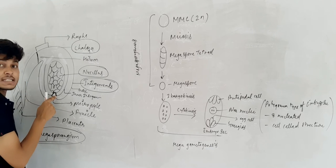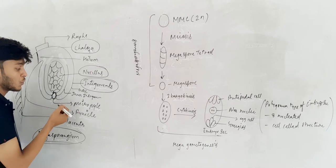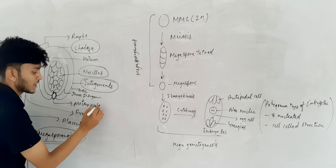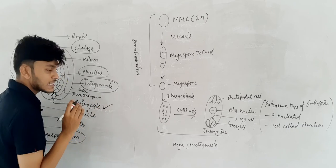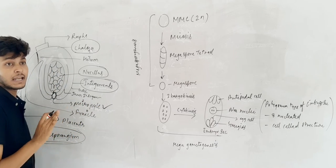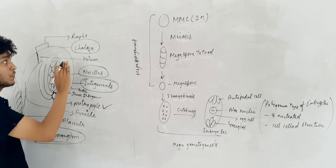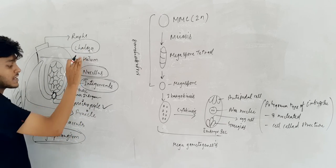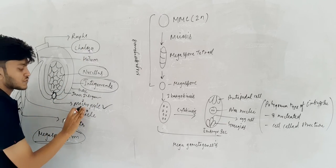There is a pole-like structure at the tip. That pole-like structure is known as micropyle, or we can say it is known as the micropylar end.